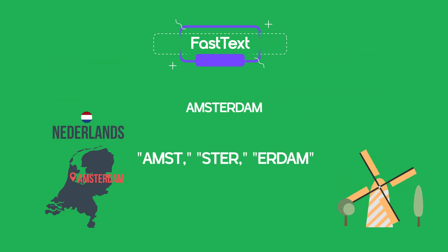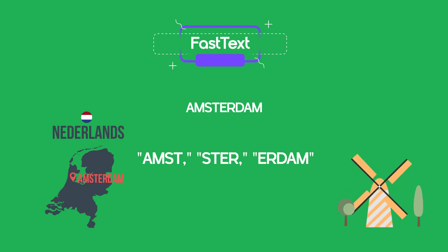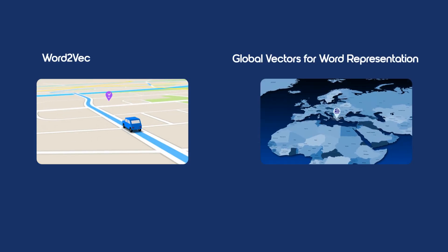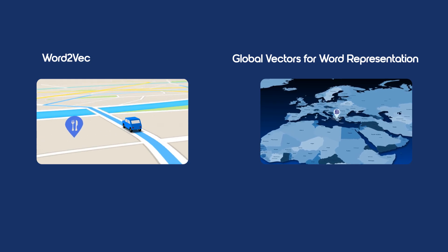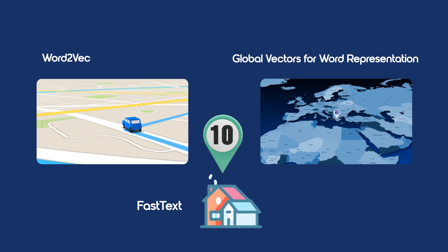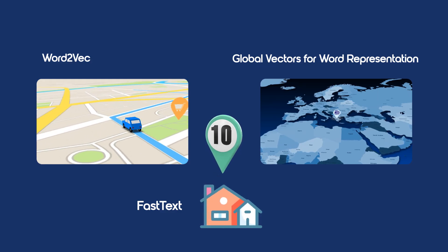For example, Amsterdam could be broken into subword units like 'Amst', 'ster', 'er', 'dam', so if a misspelled version appears, FastText still understands it. In short, if Word2Vec and GloVe create a city map using full street names, FastText adds house numbers and alleyways, making navigation even more precise.